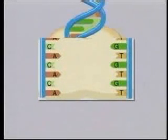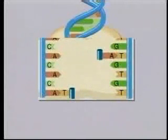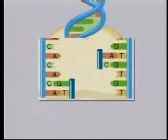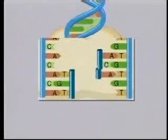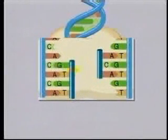Each strand of DNA is copied by an enzyme called DNA polymerase. Each old strand of DNA serves as a template for a new complementary strand. The new strands are assembled using free-floating nucleotides. Complementary base pairs are matched — A always pairs with T and G always pairs with C.